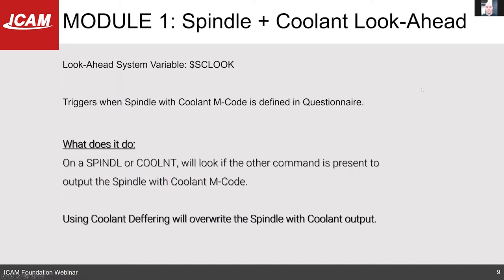The spindle plus coolant lookahead: when you have the spindle with coolant mcode defined inside of the questionnaire — located in the spindle section — every time you have a spindle or a coolant major word, the post will do a quick lookahead to see if the other word is present. If it is, it will output the spindle with coolant. If not, it will output only the spindle code or coolant code. Note that if you're using coolant deferring — to defer coolant to the next plunging or feed rate motion — this will override the spindle with coolant output, outputting both codes separately.